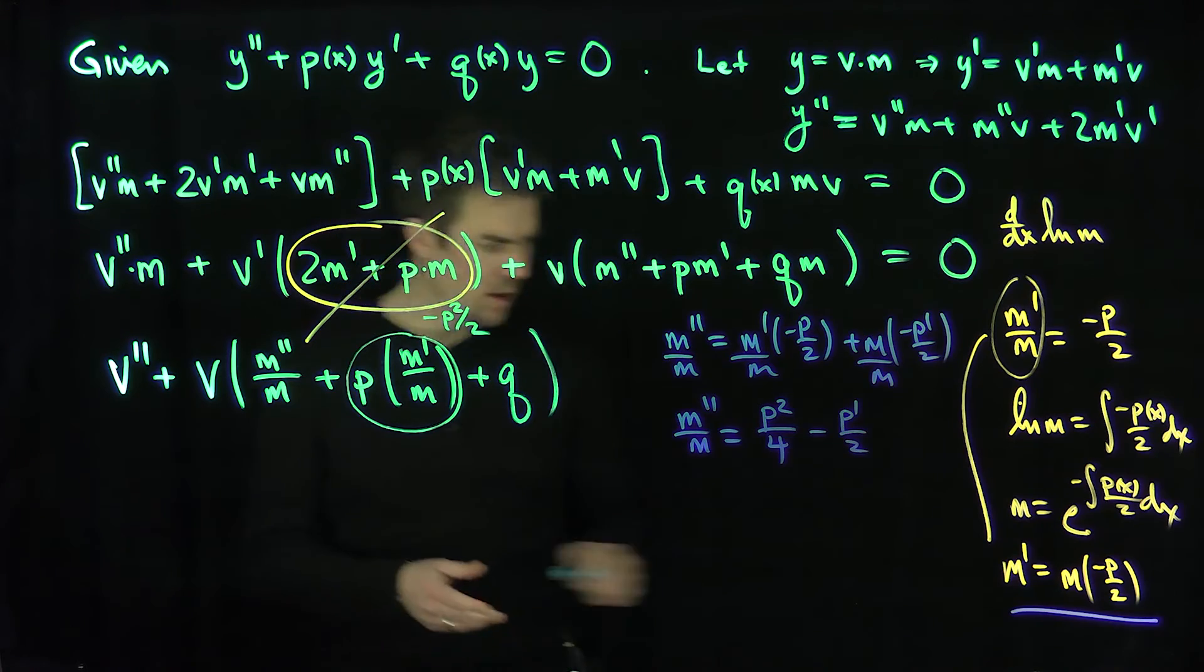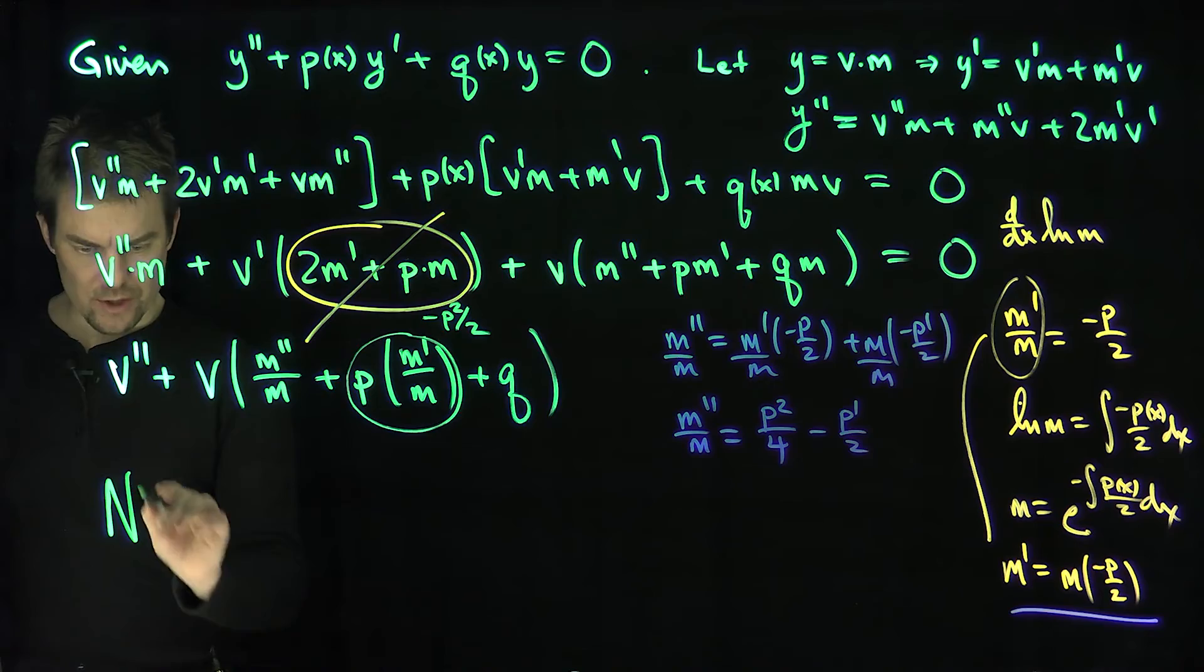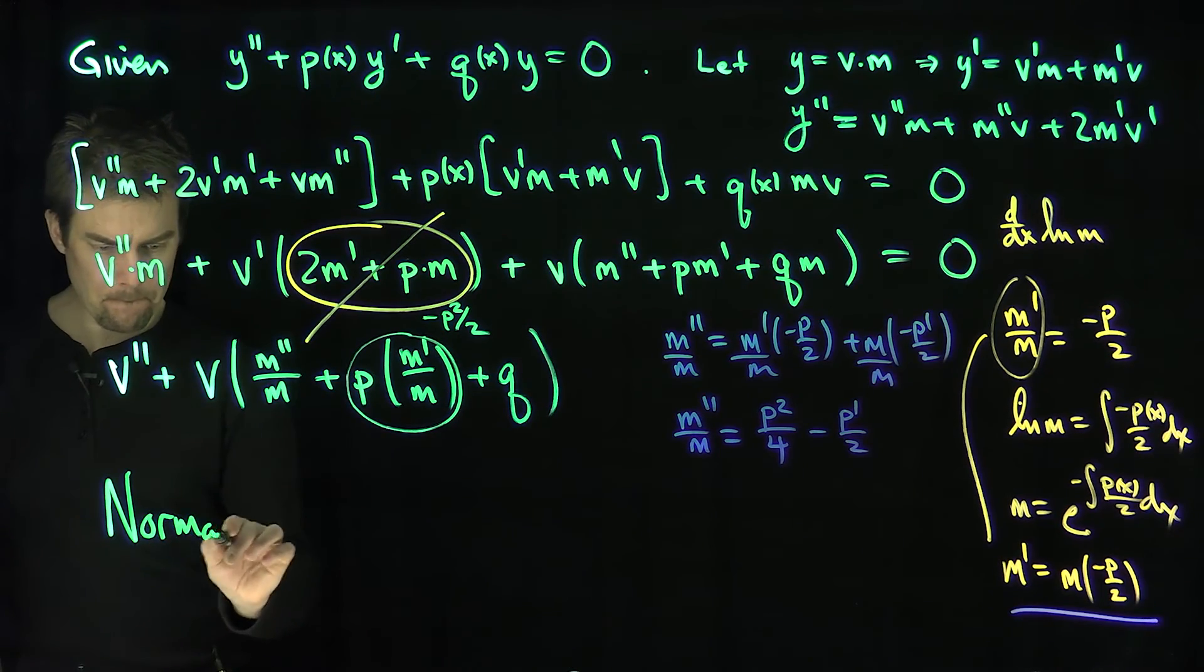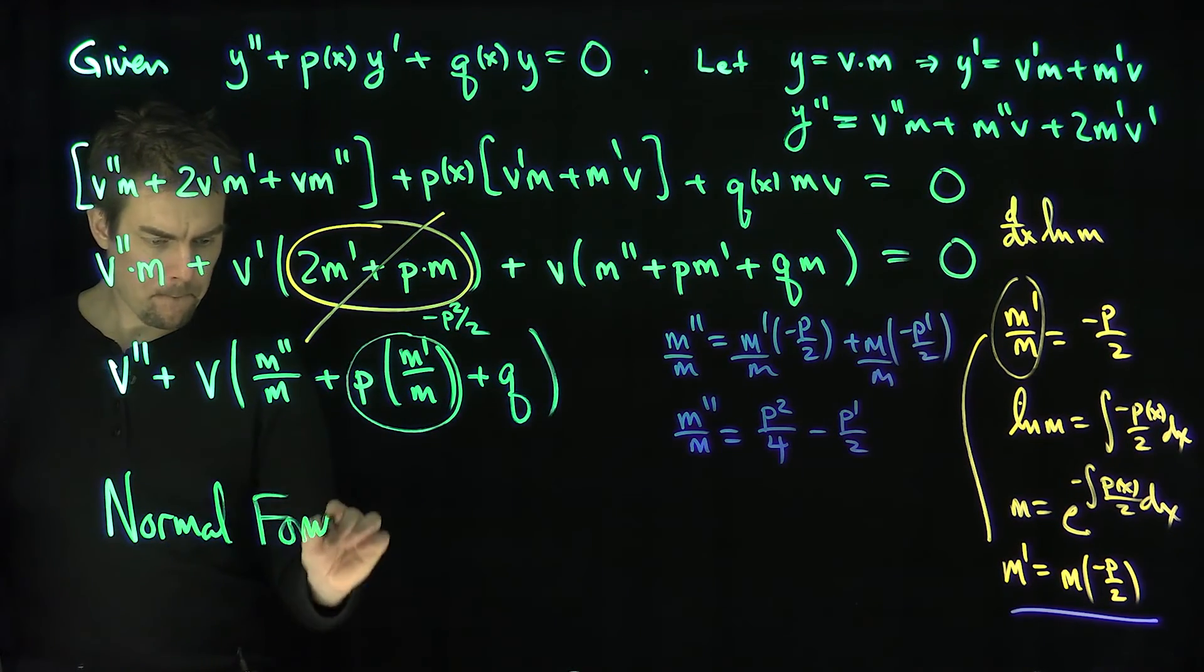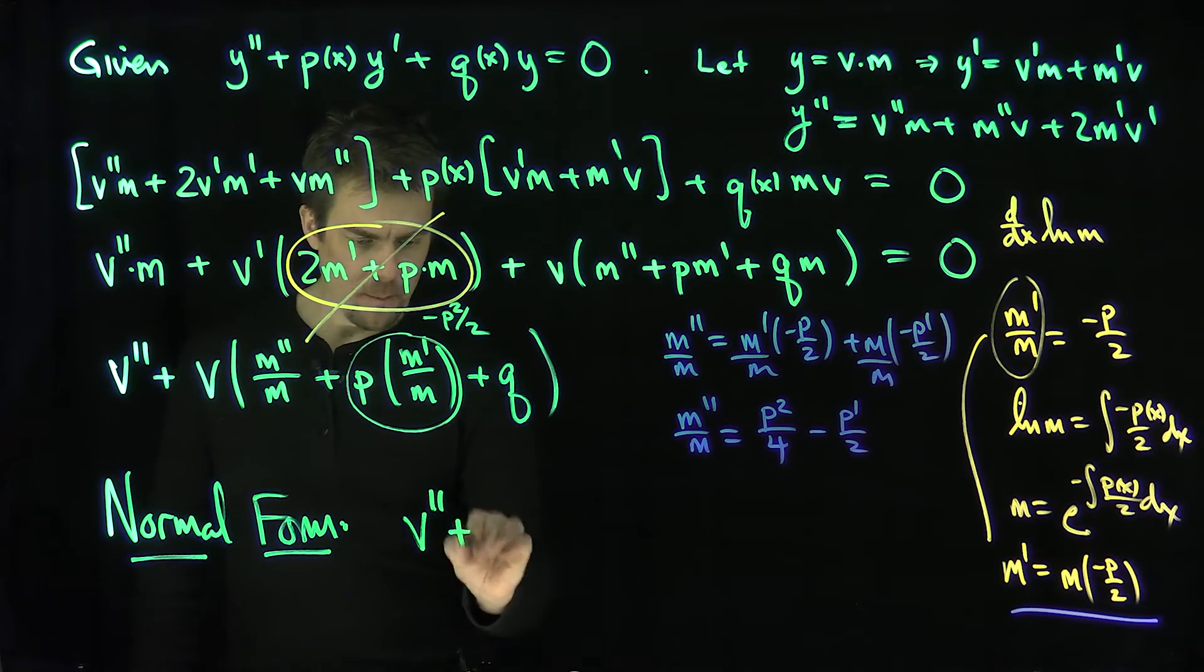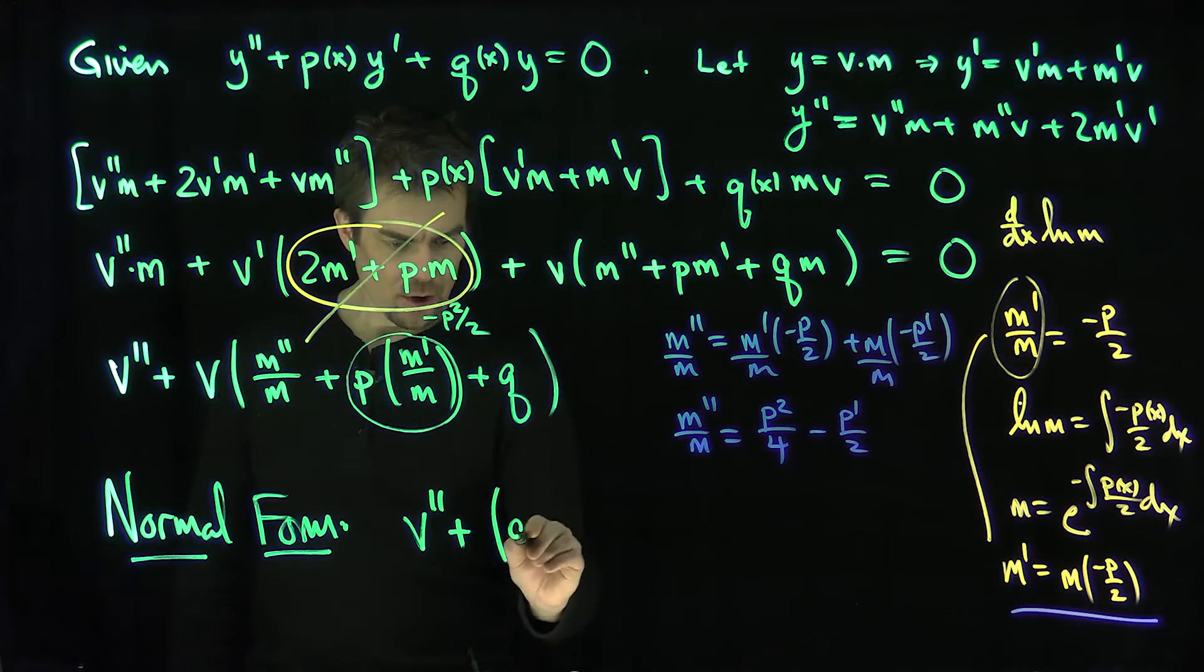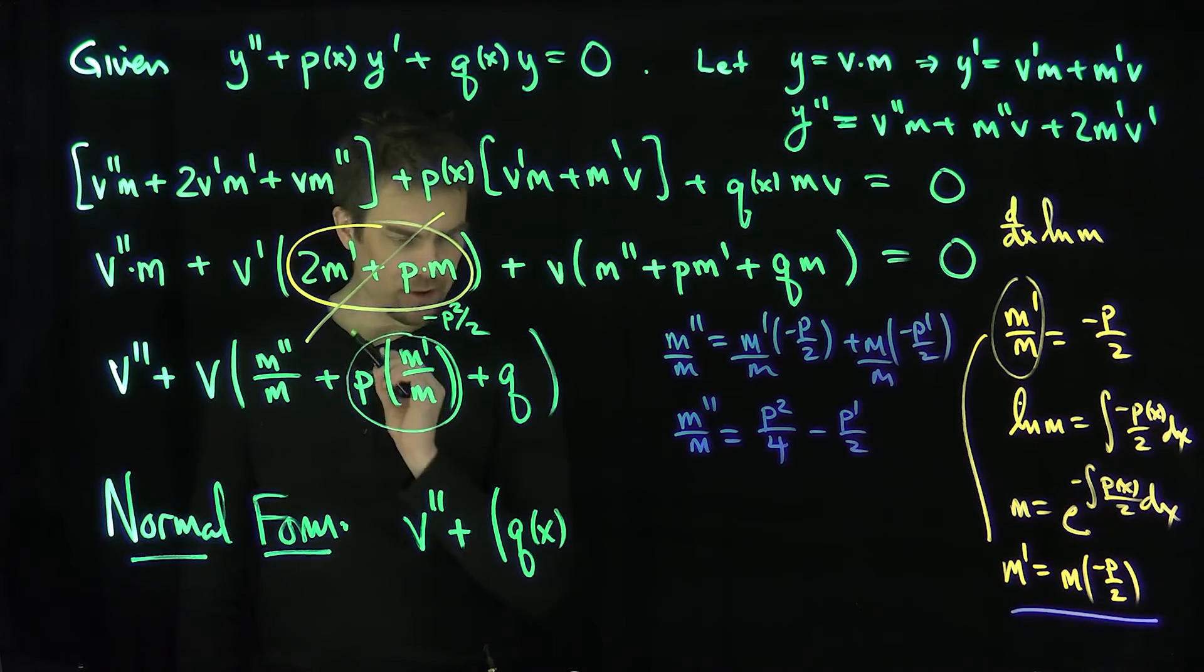So let's gather all these terms together now. So what's my normal form? So the normal form of my differential equation, the normal form is going to be v double prime plus, plus what? Plus this function q of x that sticks around,